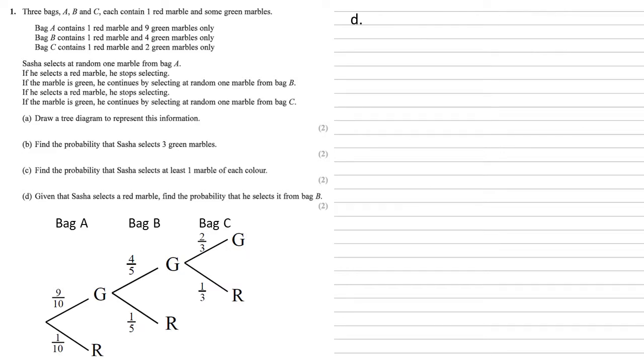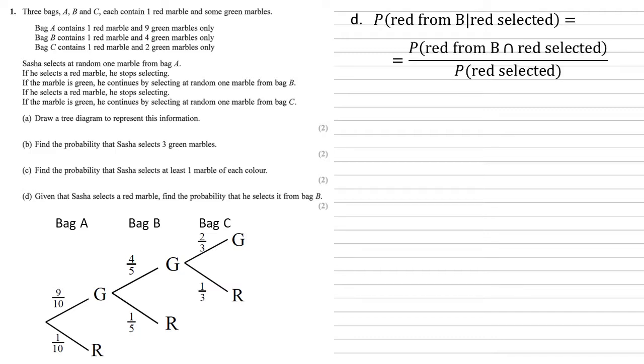Part D, given that Sasha selects a red marble, find the probability that he selects it from bag B. So we're looking at the probability of red from B, given that a red marble has been selected. Well, using our formulae that we have, we know this is the same as the probability of the intersect of a red from B and red being selected, all over the probability of a red being selected.